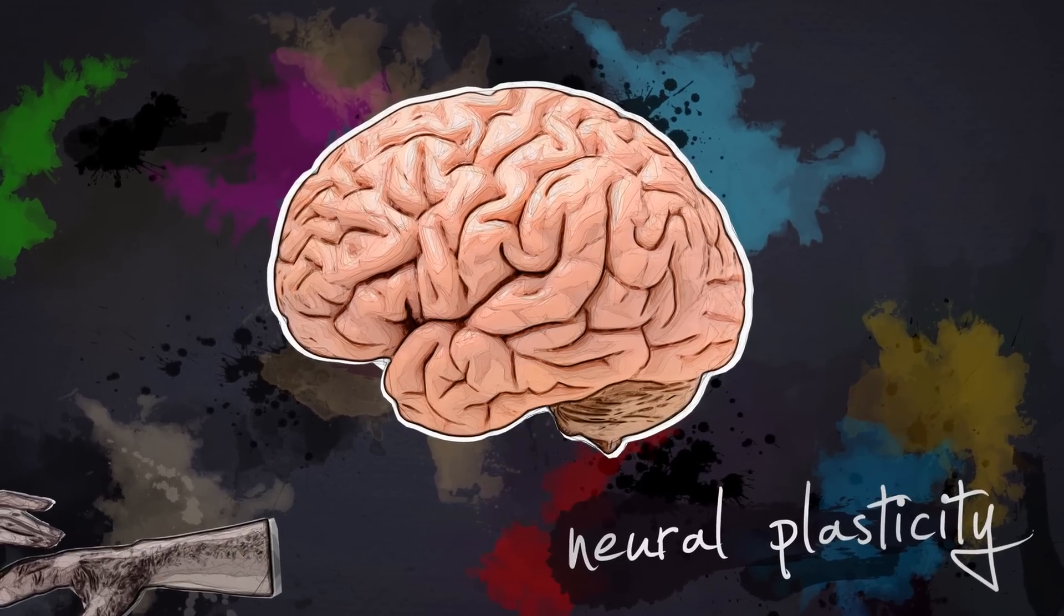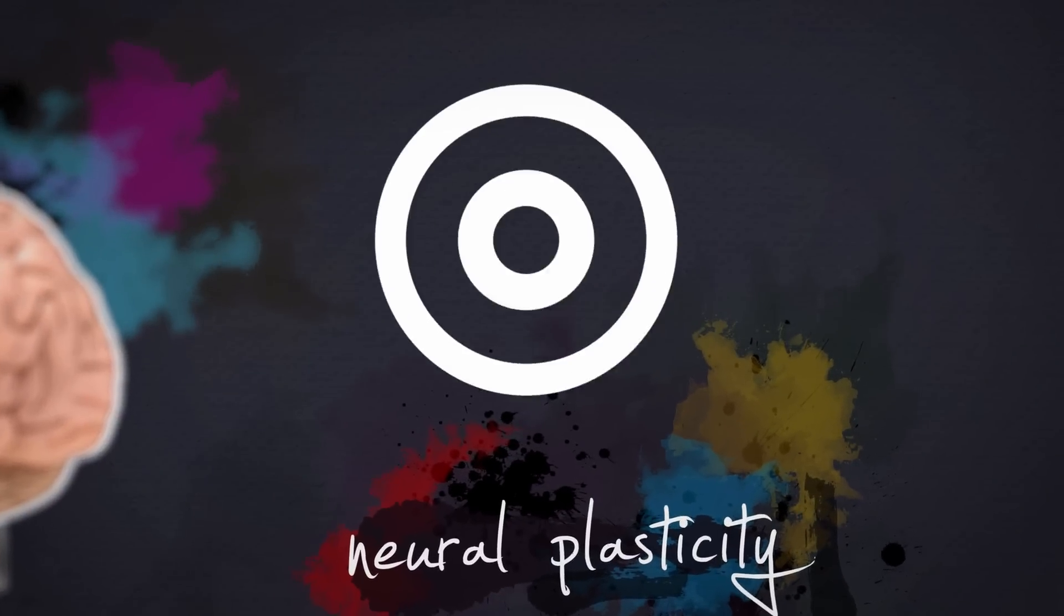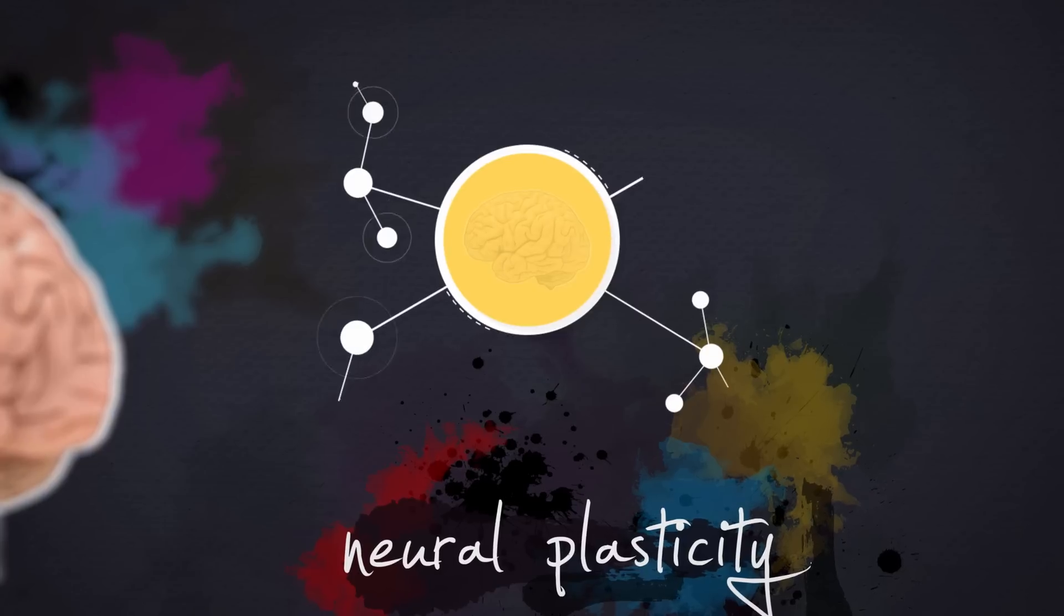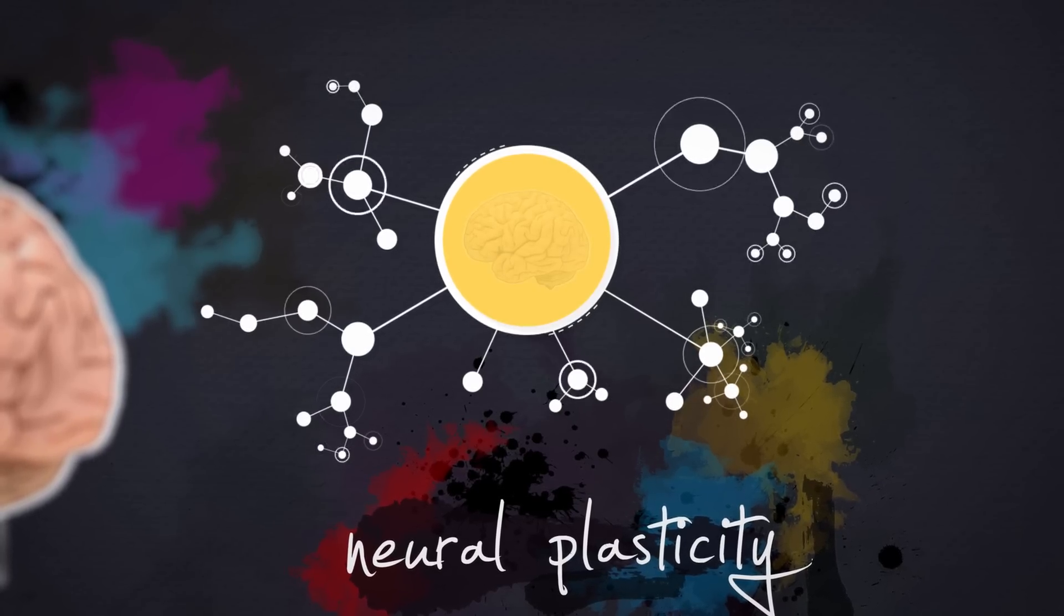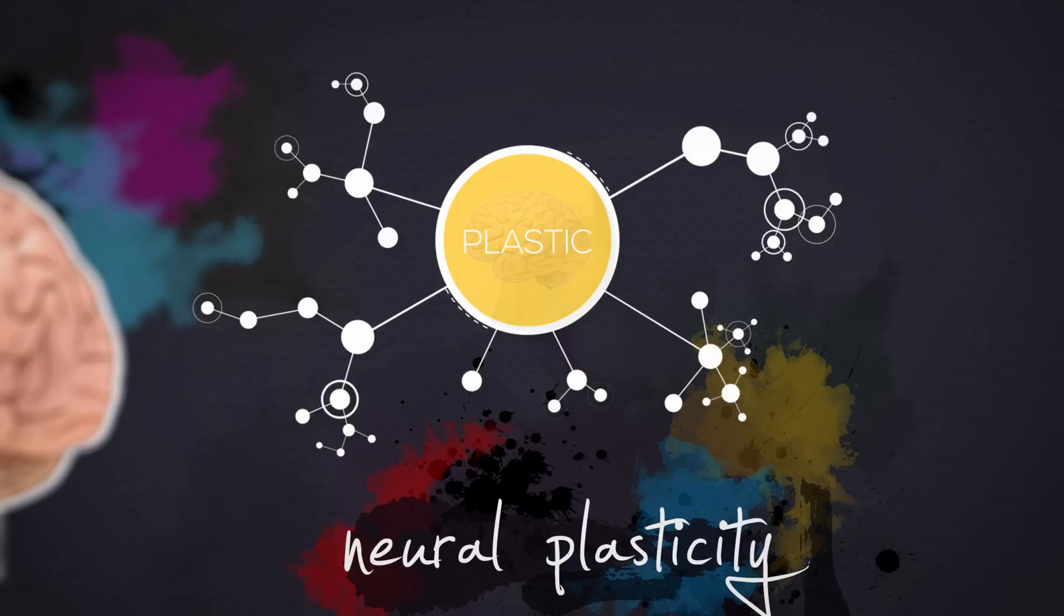The active regions that are being touched and stimulated literally start to take over the inactive regions. This process is called neuroplasticity, and until very recently most people assumed this wasn't possible, that our brains were permanently hardwired and unchangeable. But we now know that the connections are malleable. Plastic.